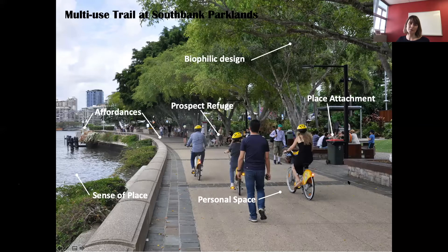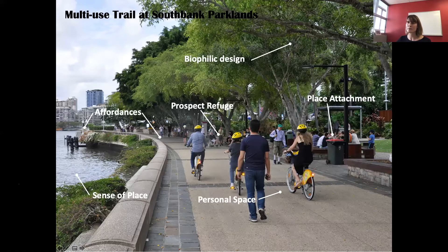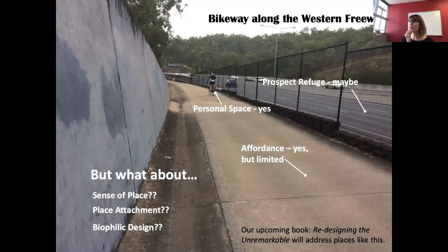South Bank also has strong biophilic design: lots of vegetation, wildlife, the river — access to nature as part of the design, not just in the background. This example shows how, even without formal theory storming, a well-designed space applies multiple theories. In contrast, the bikeway on the Western Freeway — which I photographed yesterday — is a completely different story, a commuter cycling 'superhighway.'